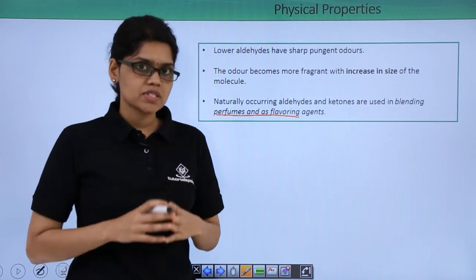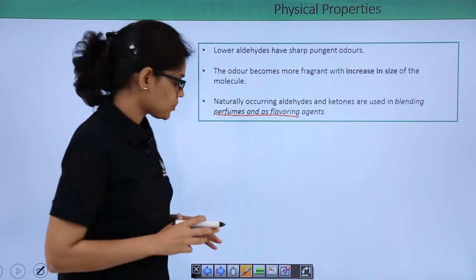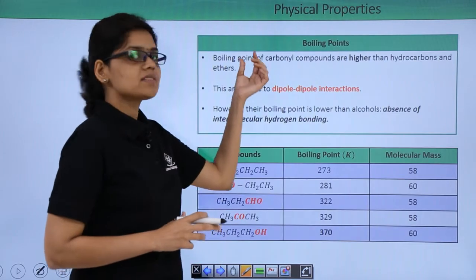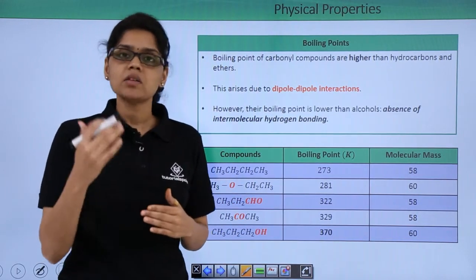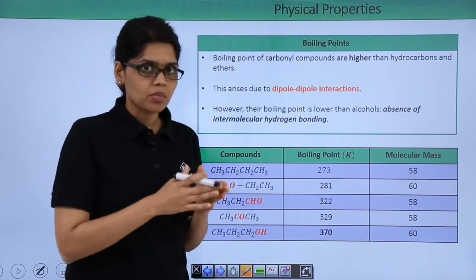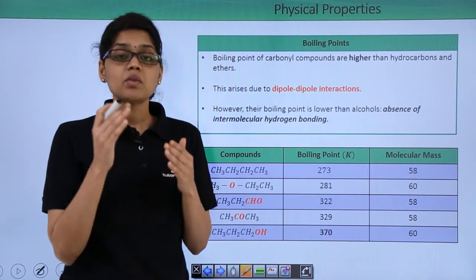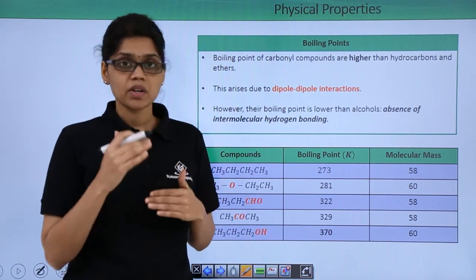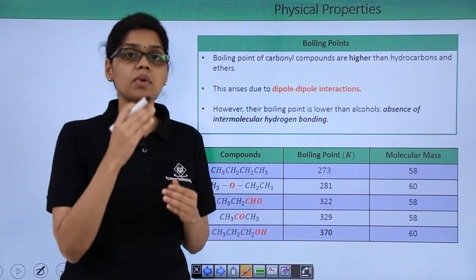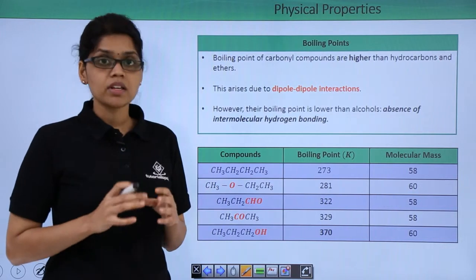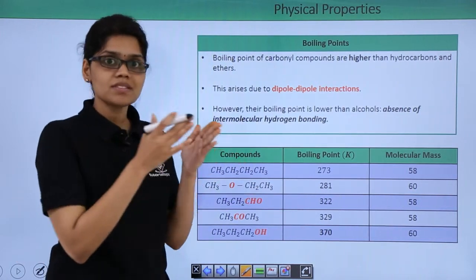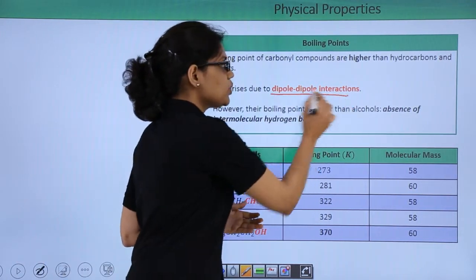Let's now look at the physical property which is boiling point. You can see that aldehydes and ketones have lower boiling point as compared to alcohols whereas they have higher boiling point as compared to hydrocarbons and ethers. Now they have lower boiling point than alcohols because of their inability to form hydrogen bonds with each other. However, they have a considerable boiling point as compared to hydrocarbons and ethers due to dipole-dipole interaction.